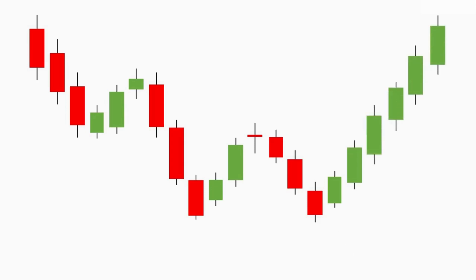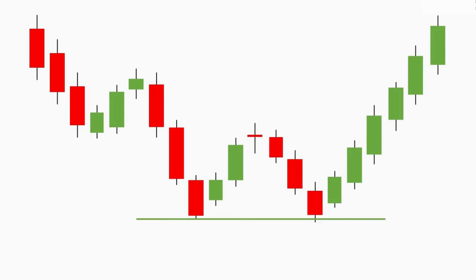The price takes support at the previous bottom, and after that we can expect a good bullish rally in the market. You can see on the screen how this pattern is formed — the price takes support at the previous bottom, which forms bottom one and bottom two. The double bottom pattern is also called the W pattern because it resembles the shape of the letter W. Similarly, the double top pattern is called the M pattern because it looks like the letter M. If you find the price forming a W shape after a downtrend, it is a double bottom; if it forms an M shape after an uptrend, it is a double top.